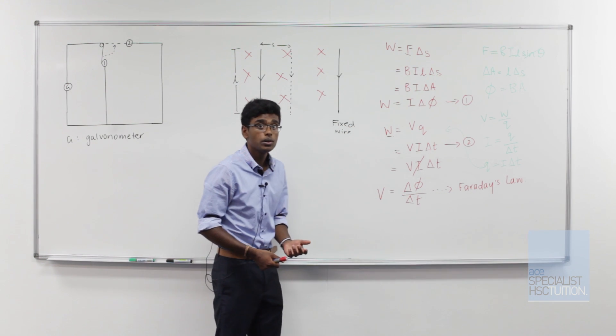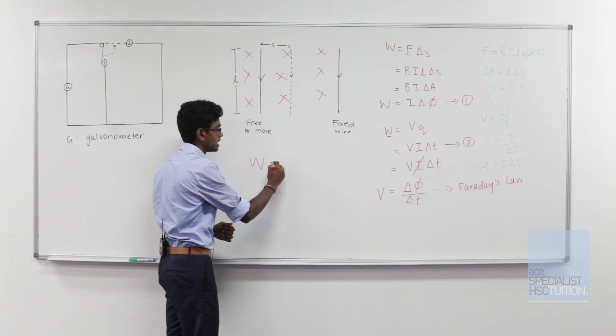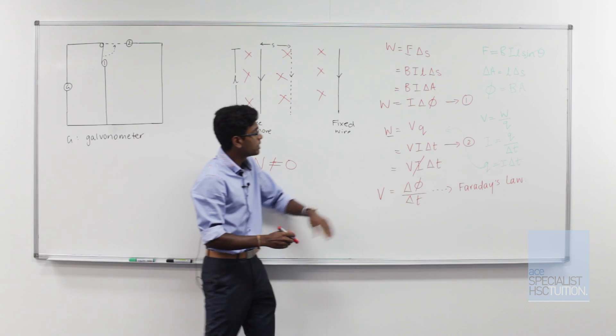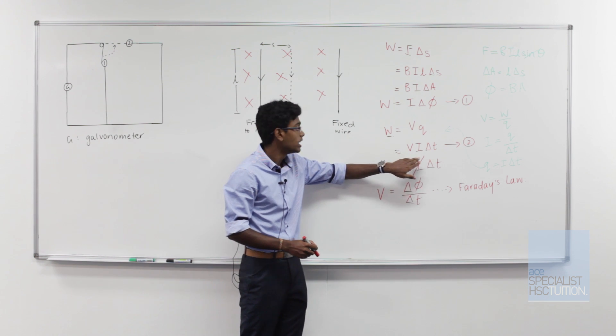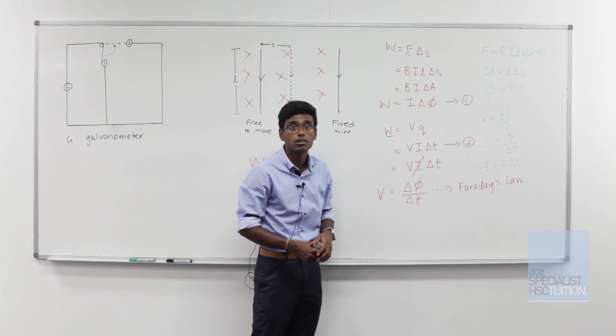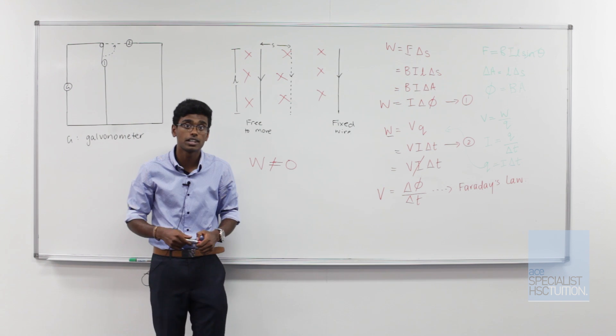In doing so, we need to realize that work cannot equal zero. If work was to equal zero, then looking at equation two, voltage would equal zero, current would equal zero, or delta t would equal zero. If any of these were equal to zero, we would have no current flowing in our circuit.